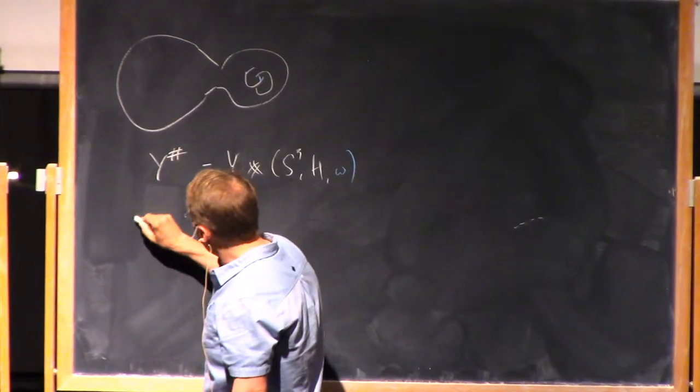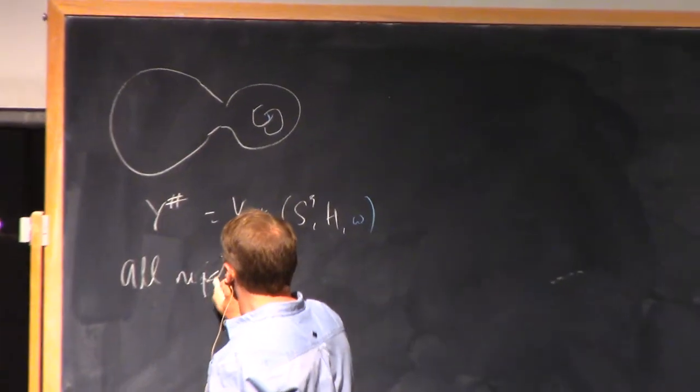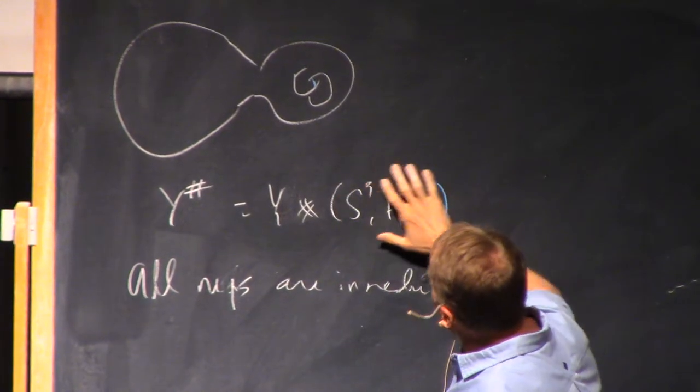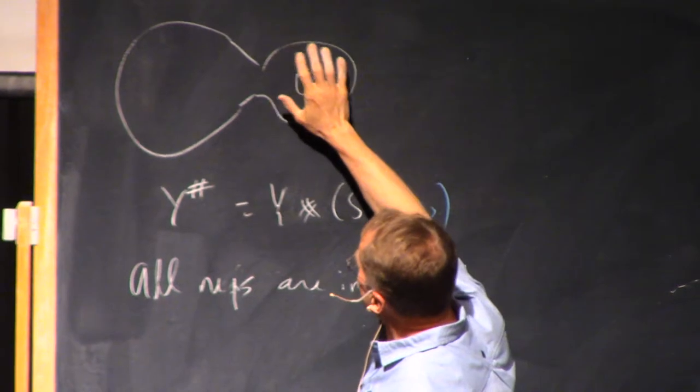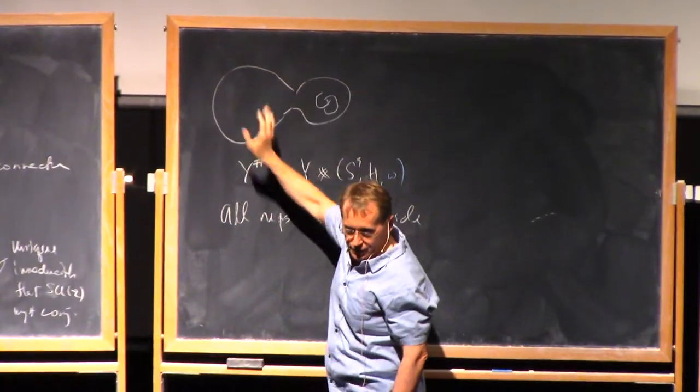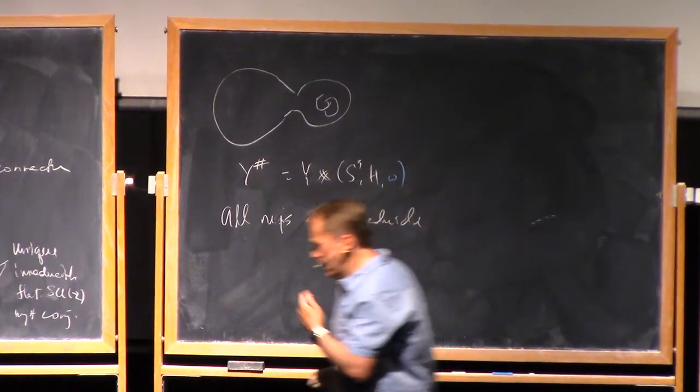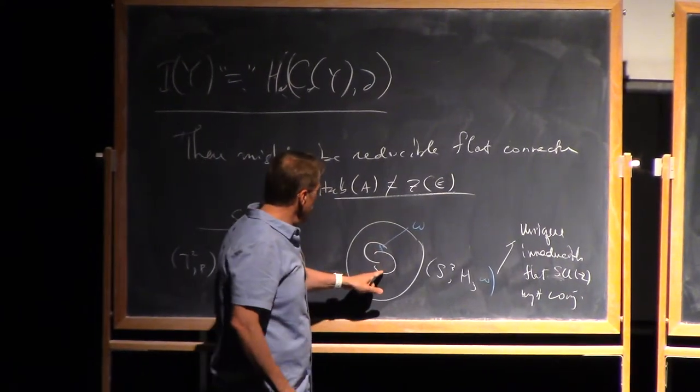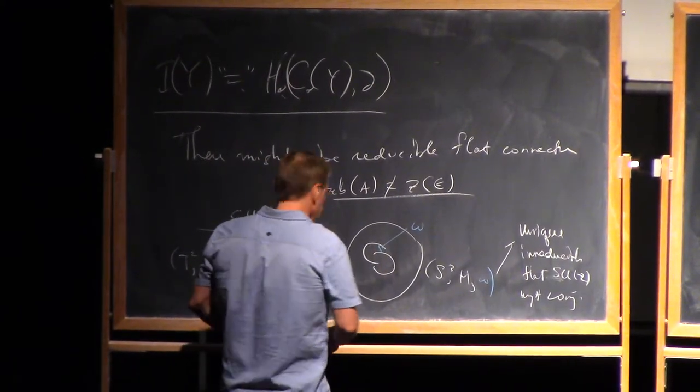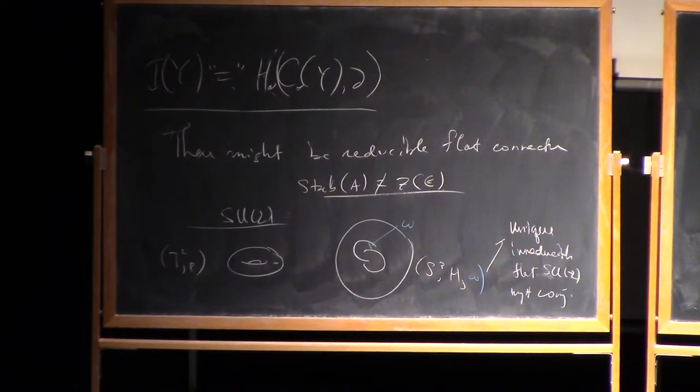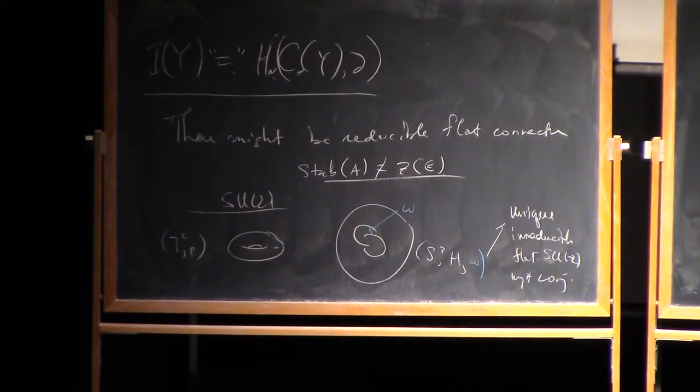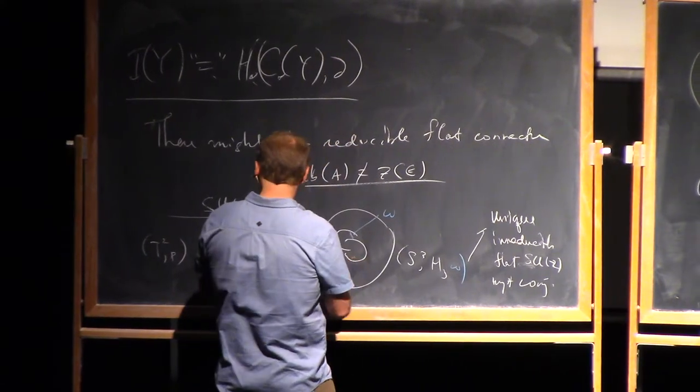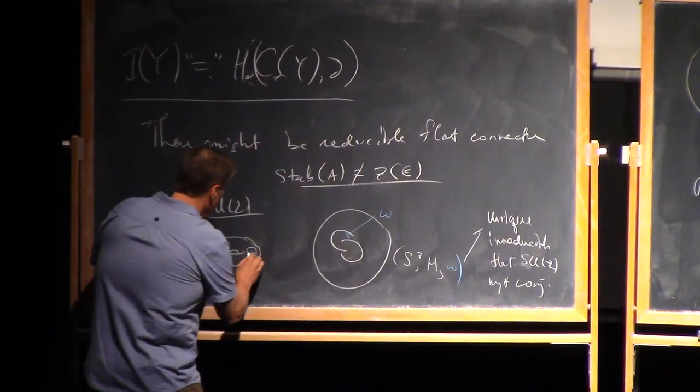Let's call this Y-sharp, so that's just the connect sum of our three-manifold with this three-sphere and the Hopf link in this curve omega. Now, this has all representations that are irreducible, right? Because since it's irreducible over here, this guy doesn't have any stabilizers, so whatever it has over here, the whole thing can't have a stabilizer. So that's great. But now, we've run into a slight problem. We have this Hopf link and actually the holonomy, well, by construction...